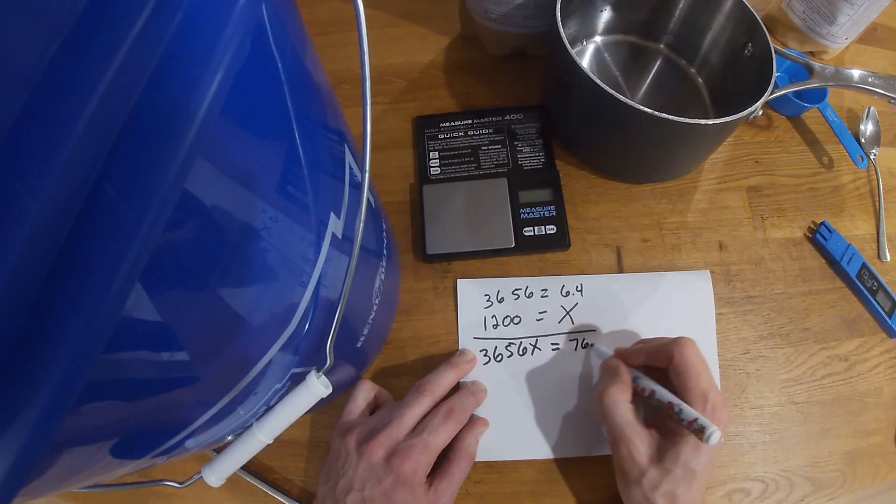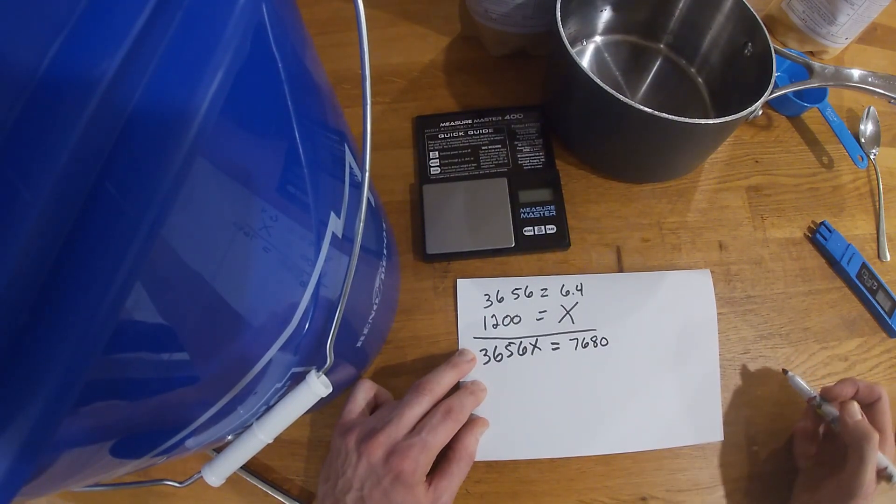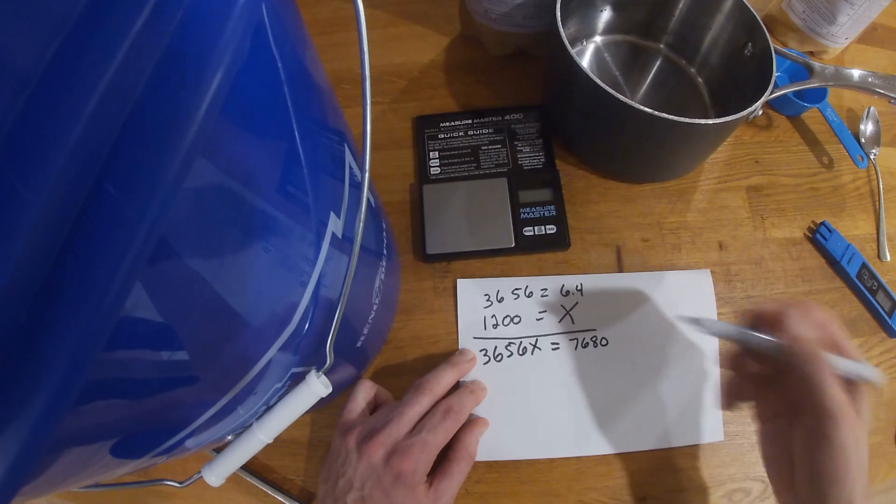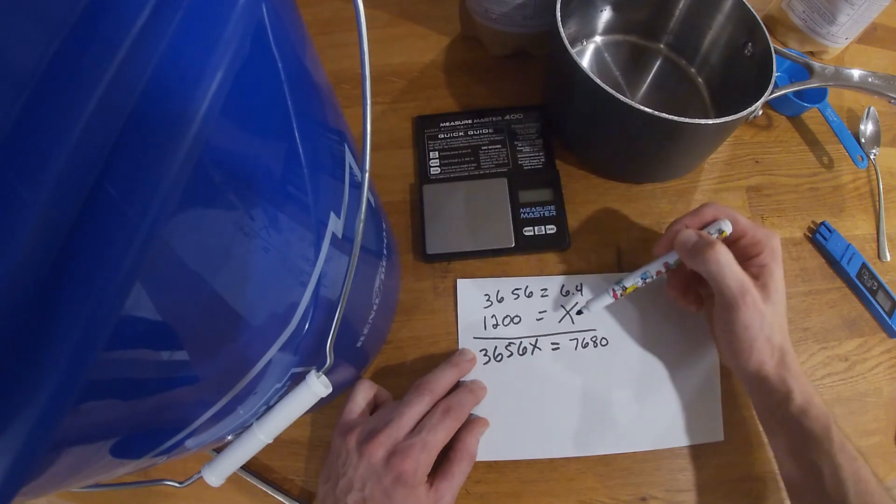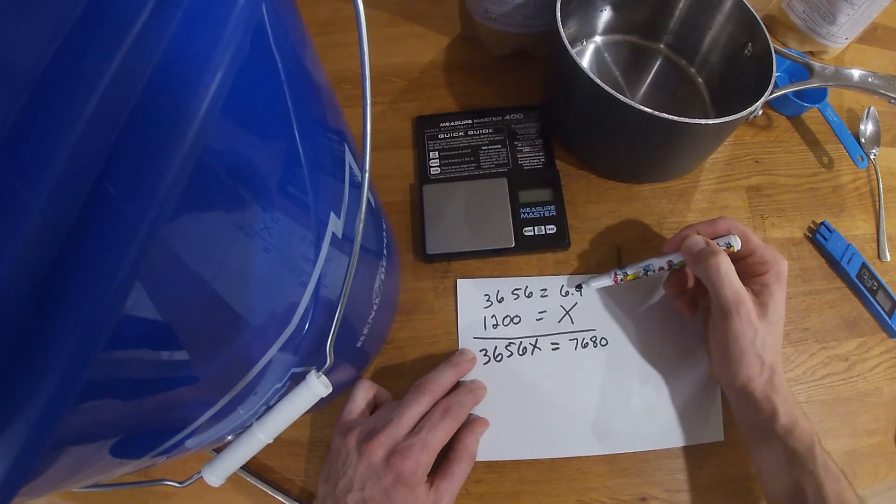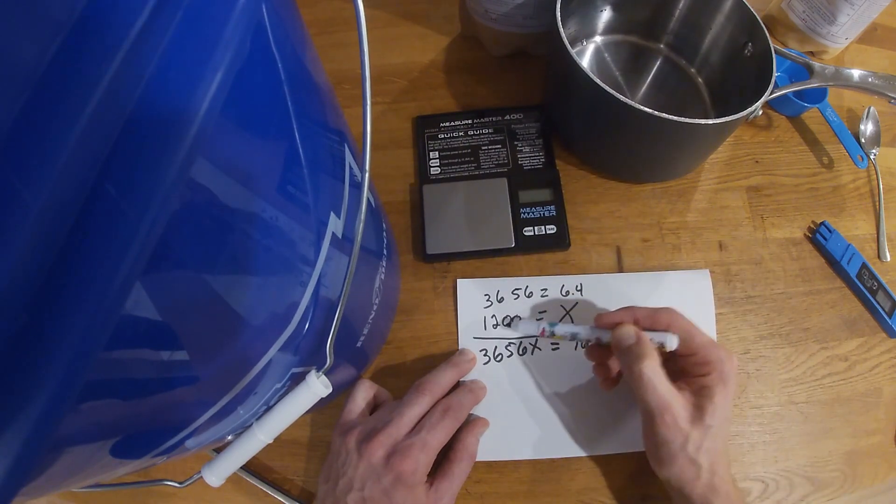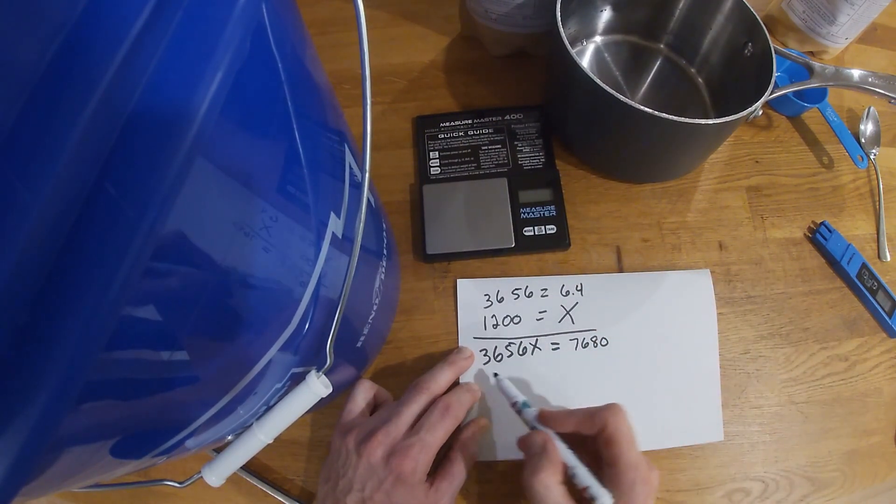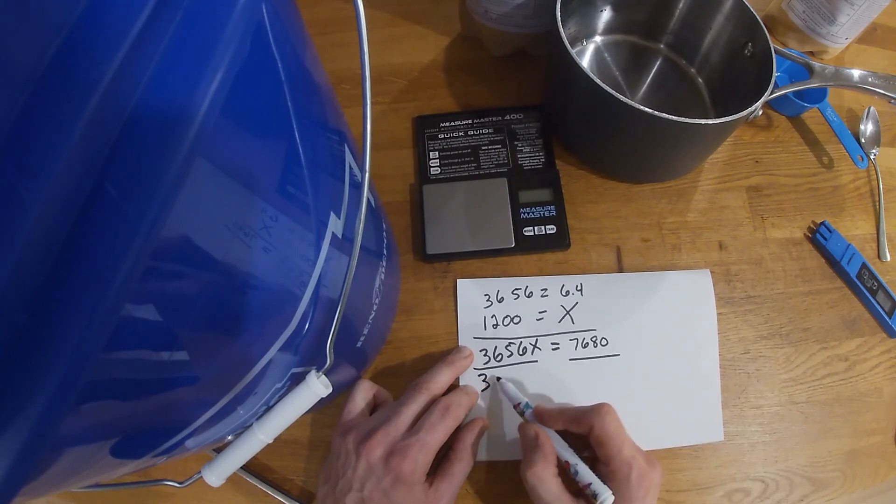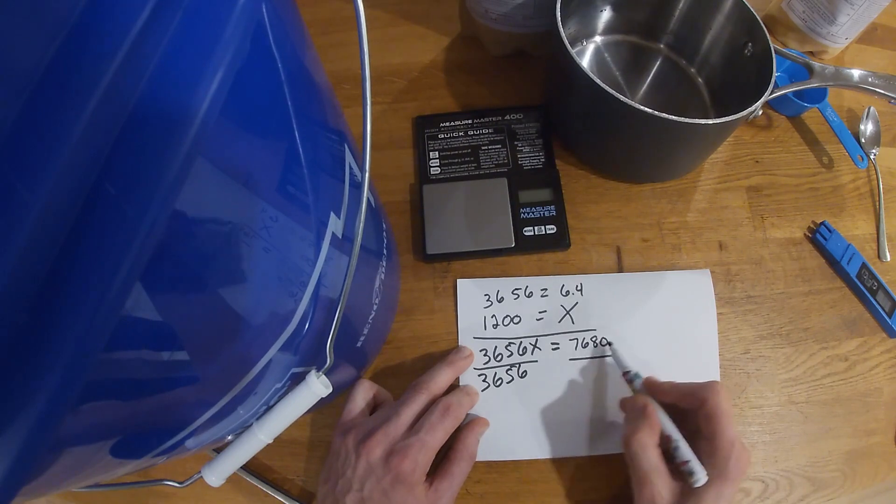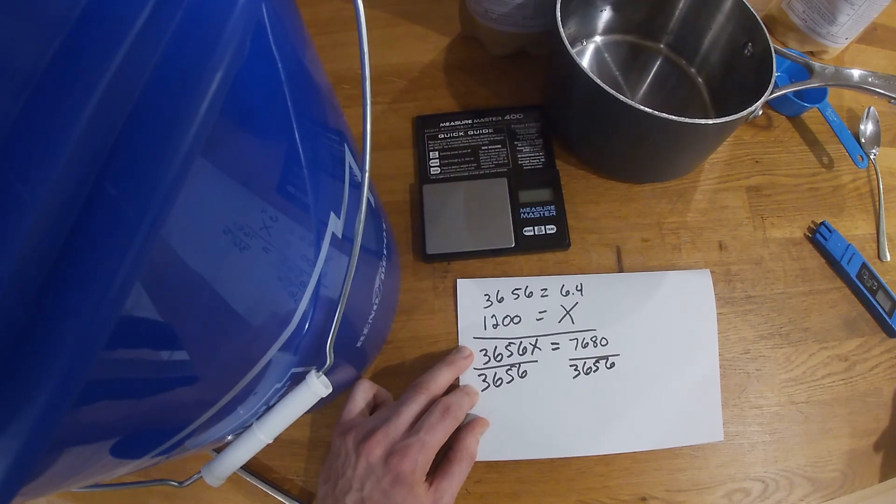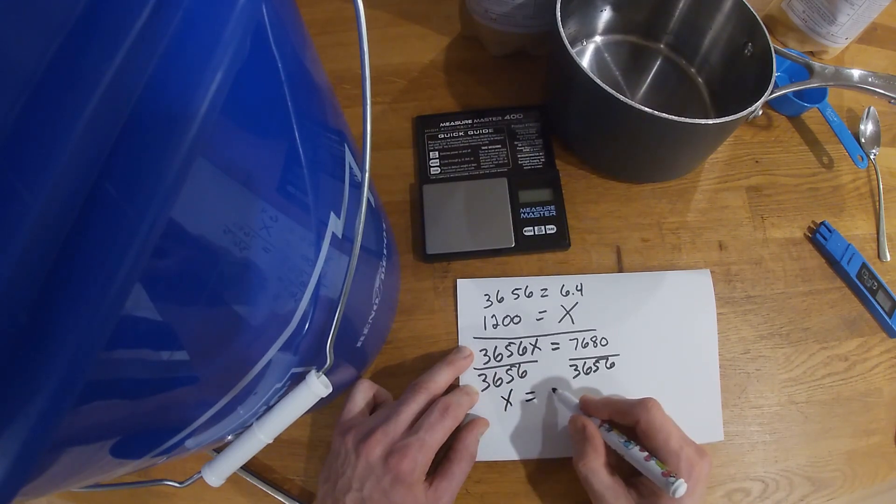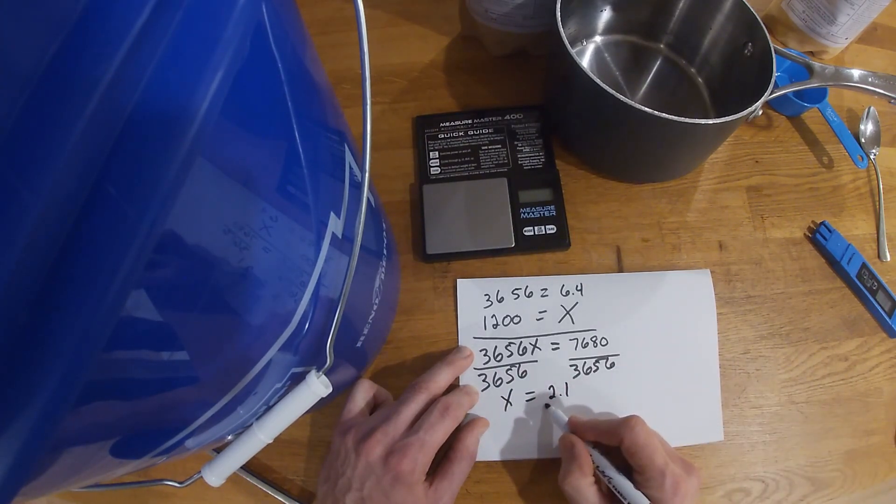So then you're gonna go 3656 times X equals 1200 times 6.4. 1200 times 6.4 which is 7680. Essentially this is a very simple equation - it's one of those that you ask your teacher in high school, 'Hey when will I ever use this? It's useless math.' Well I'm using it today. So essentially this top number times this one equals this times this. So now we want to find out, I want to isolate the X, so we're gonna divide that by 3656.